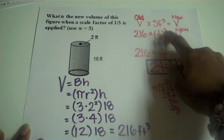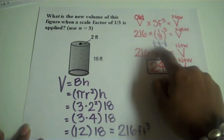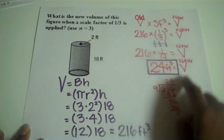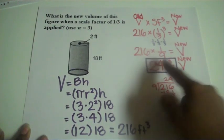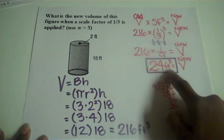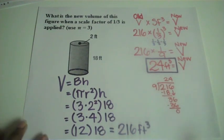But the volume of that cylinder is 216 feet cubed. We're going to multiply by the scale factor 1 third cubed, which is 1 third times 1 third times 1 third. So it means we're doing that volume 216 times 1 ninth, which is the same as dividing by 9. And we get a new volume of 24 feet cubed.